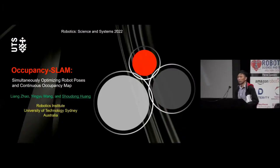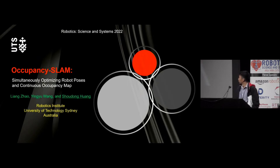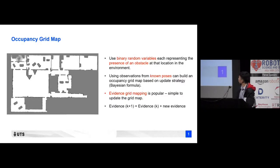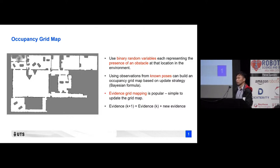The next talk is Occupancy SLAM: simultaneously optimizing robot poses and continuous occupancy map, being presented by Shodong Huang. Good morning everyone. My name is Shodong Huang; this is a joint work with Liang Zhao and Yingyu Wang, all from the Robotics Institute at the University of Technology Sydney in Australia.